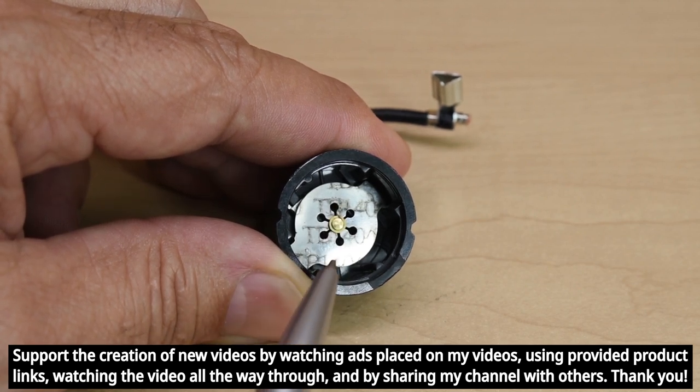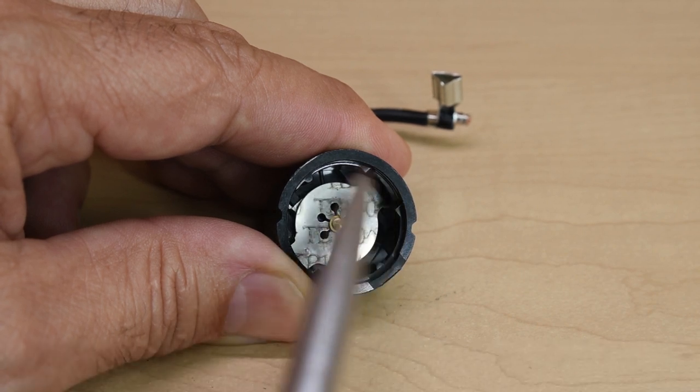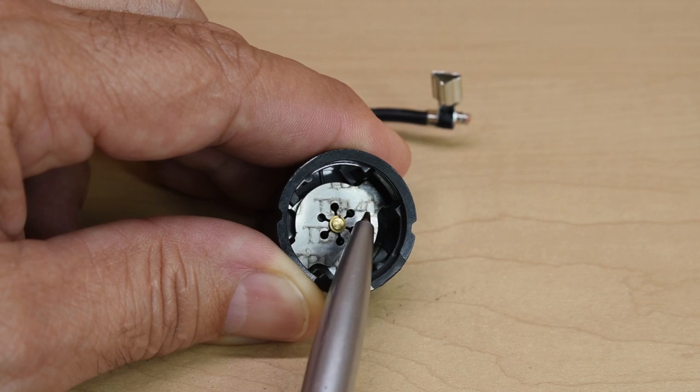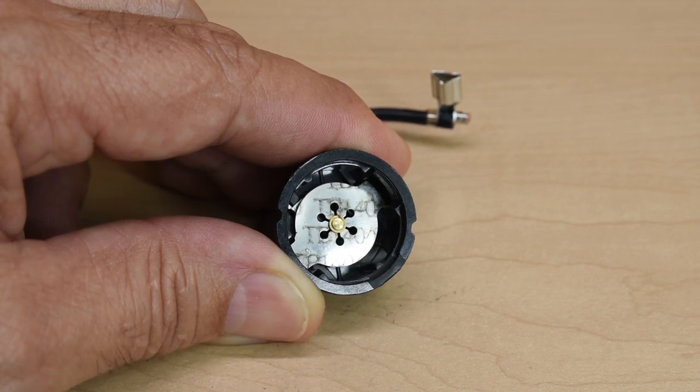To demonstrate, I'm going to take my heat gun. We're going to heat up the face of this overload protector, and you're going to see when this gets hot enough it's going to pop in the opposite direction.